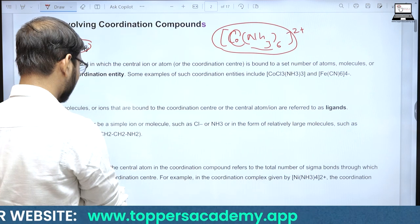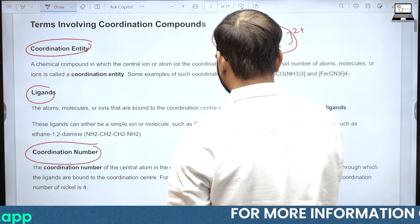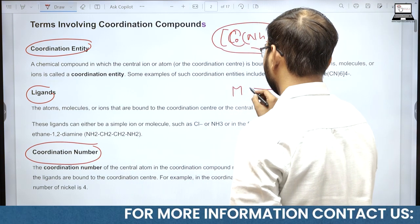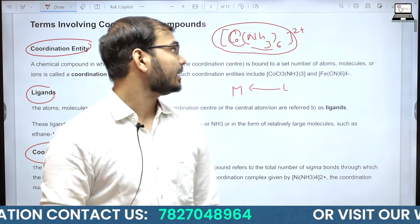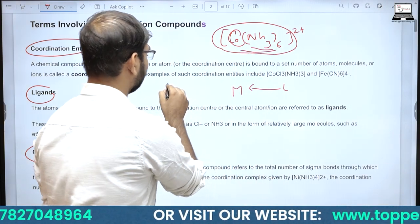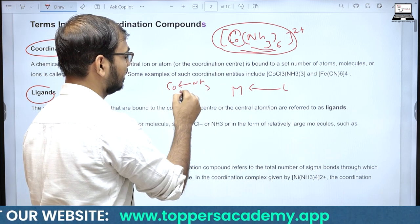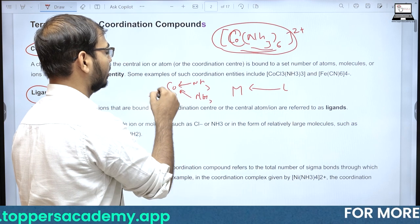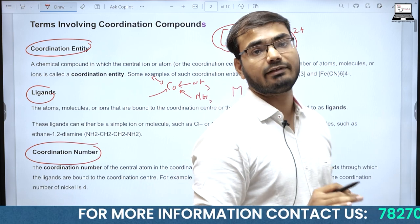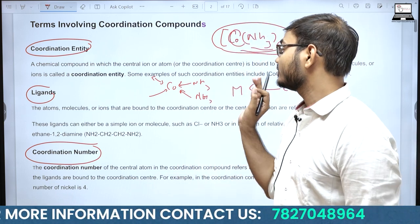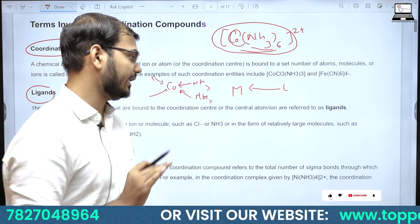Coordination Number का मतलब है कि एक metal, ligand से कितनी sigma bonds से जुड़ा हुआ है। इस case में 6 ligands हैं तो cobalt 6 sides से NH3 ligands से घिरा हुआ है, इसलिए coordination number 6 है। ध्यान रखिए: सिर्फ sigma bonds को ही consider किया जाए, किसी भी pi bonds को यहाँ calculate नहीं किया जाता।